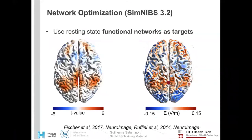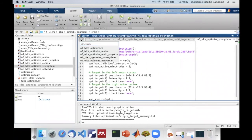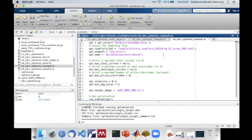Finally, SimNIBS 3.2 will also feature optimization of distributed targets, that is network optimization. This means you will be able to use resting state fMRI DMaps as an optimization target. Here is an example of how to do it. The code is quite straightforward. All you need to do is to give a target DMap that you want to reproduce, and a few more settings like safety constraints, number of maximum electrodes, and target intensity.